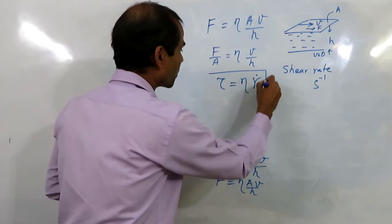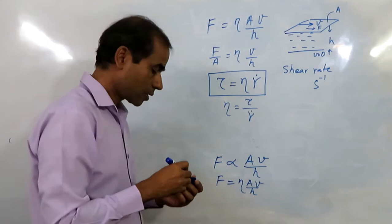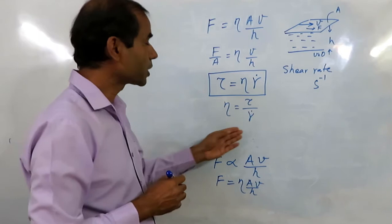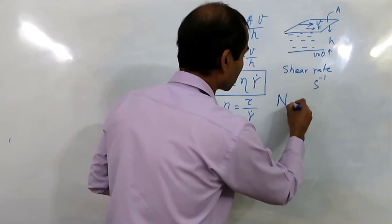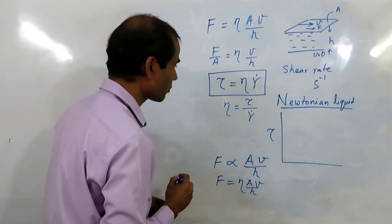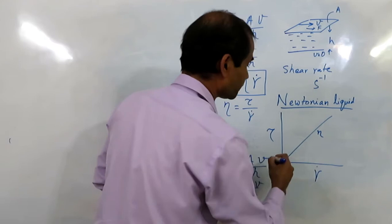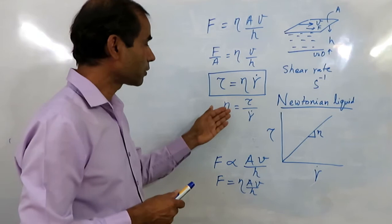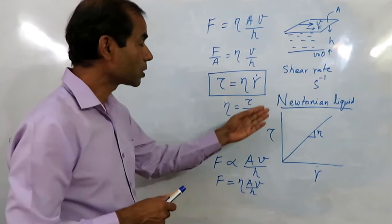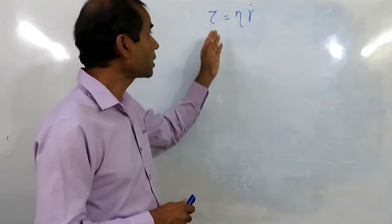Viscosity is basically shear stress divided by shear rate gamma dot. This equation is valid for liquids which follow this kind of linear trend, and these kinds of liquids are known as Newtonian. If we plot a graph of shear stress as a function of shear rate, it should give us a straight line and the slope of this straight line will be eta. This is the proper definition of viscosity and the Newtonian fluid. Other kinds of liquids which do not follow exactly this behavior are known as non-Newtonian fluids.